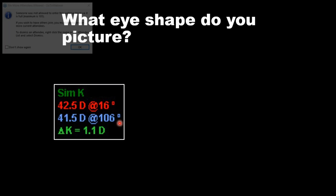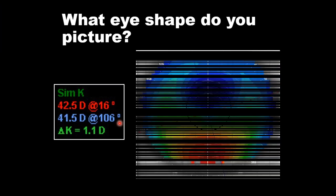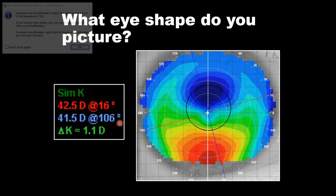Otro ejemplo — lo mismo, en este caso es astigmatismo en contra de las reglas, a 106 grados, 1.1 dioptría. Imagínense cómo pudiera ser la forma de la topografía. Now here's the topography associated with these K readings — this is a highly irregular cornea, a post-LASIK ectasia.